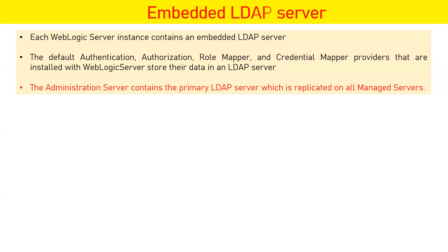The administration server contains the primary LDAP server, which is replicated on all managed servers. In a WebLogic domain we have an admin server and managed servers, and the embedded LDAP store must exist on each of them. The admin server's LDAP configuration is called the primary LDAP server configuration. Whenever we create a user, change a password, or create any provider from the admin console, it gets replicated from the admin server's primary LDAP to all managed servers.